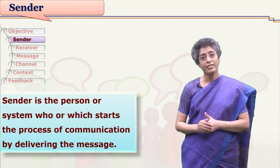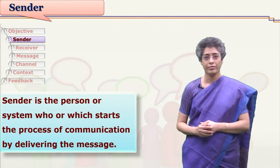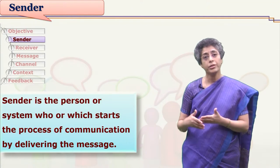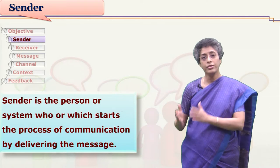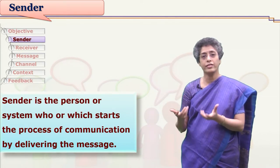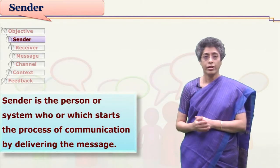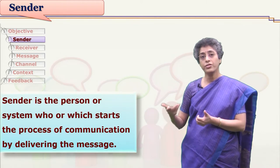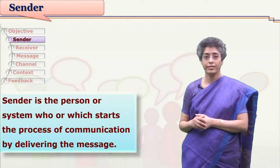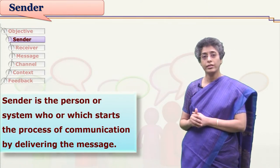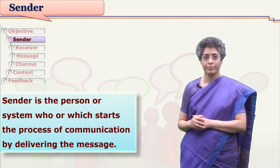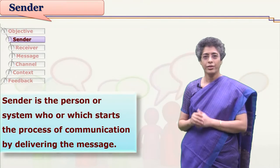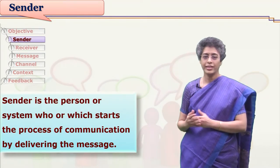You might wonder why the sender is described as a person or a system. Many times human beings themselves start communicating, but wherever a human being cannot impart information, they use some different channel or system device. For example, automated messages are delivered by a system, which then becomes the sender. If we set an alarm on our cell phone, the cell phone sends us the message 'wake up' — so a sender need not always be a person; it can be a system.